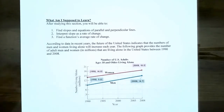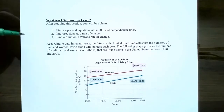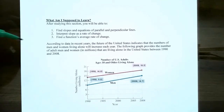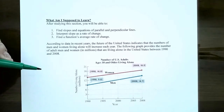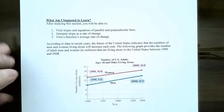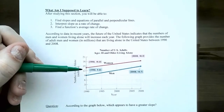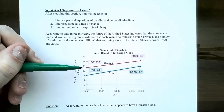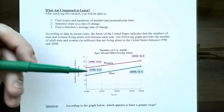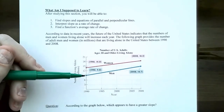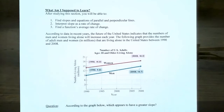We're going to start off with an application. According to data in recent years, the future of the United States indicates that the number of men and women living alone will increase each year. The following graph provides the number of adult men and women given in millions living alone in the United States between 1990 and 2008. The magenta or red line represents U.S. women living alone aged 18 or older, and the dark green or blue line represents the number of men living alone.